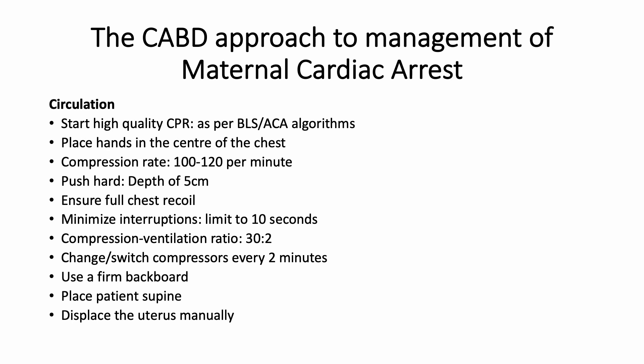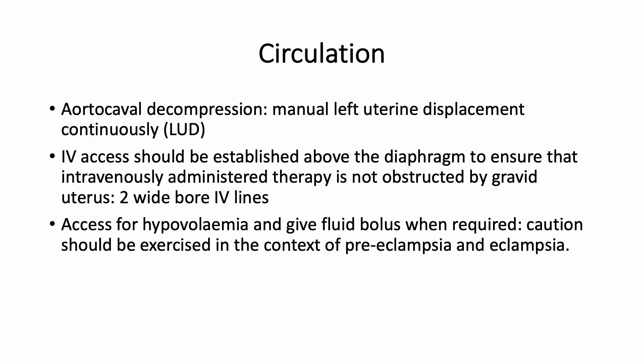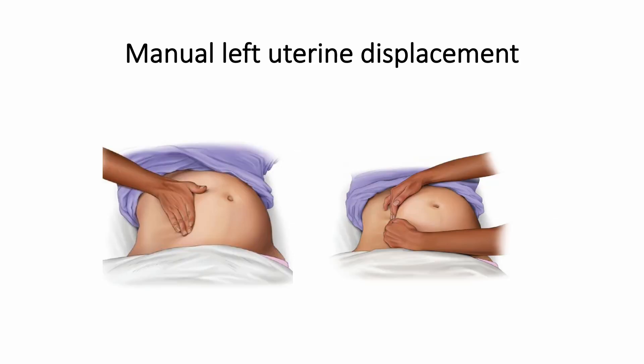Use a firm backboard. Place the patient supine and displace the uterus manually — aorto-caval decompression is required with continuous manual left uterine displacement. IV access should be established above the diaphragm to ensure that IV therapy is not obstructed by the gravid uterus. Ensure two wide-bore IV lines. Assess for hypovolemia and give a fluid bolus when required. Caution should be exercised in the context of preeclampsia and eclampsia.